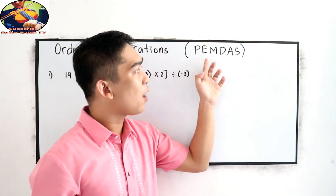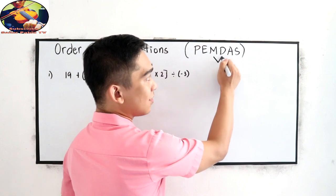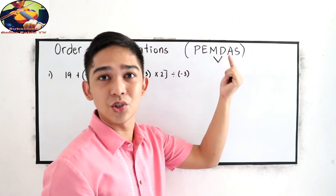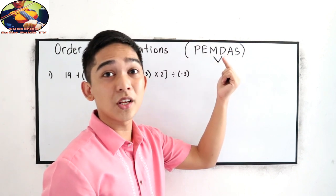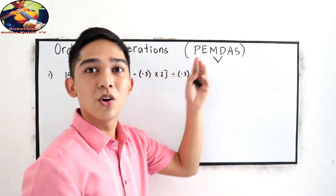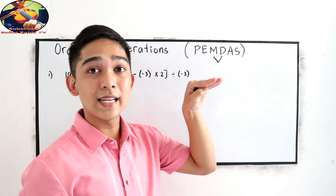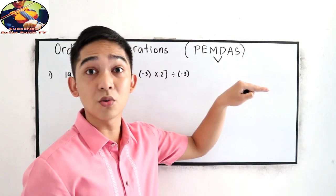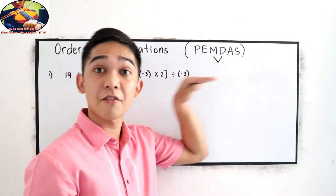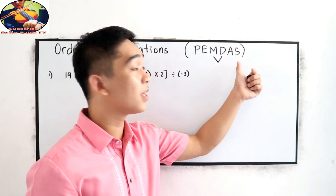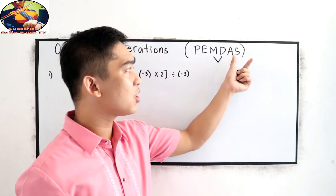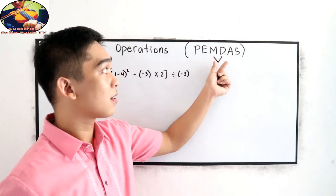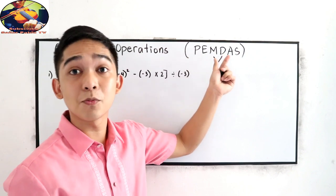Now, for M and D — multiplication and division — they can be interchanged according to which occurs first from left to right. The same applies to addition and subtraction. A lot of students encounter problems with multiplication and division.